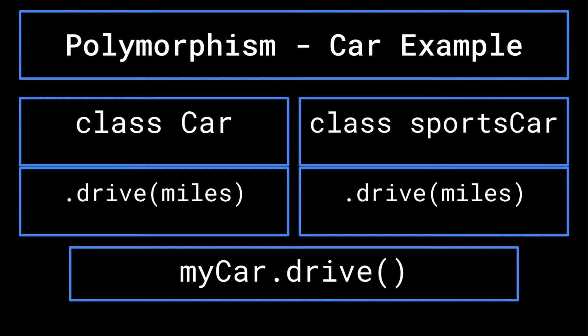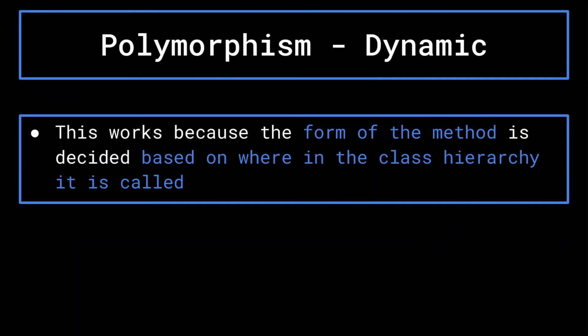However, were you to create an instance of the car class called my car, my car dot drive would instead decrease my car's gas by 0.04 gallons per mile. This is an example of dynamic polymorphism, as the implementation of a method signature can change depending on which level in the class hierarchy that it is called.